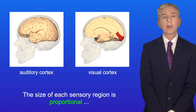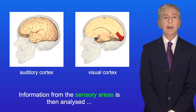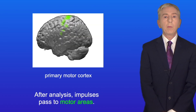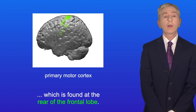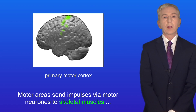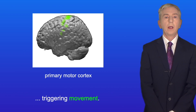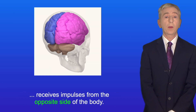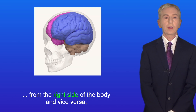The size of each sensory region is proportional to the number of receptor cells in that sense organ. Information from the sensory areas is then analyzed in nearby regions called association areas. After analysis, impulses pass to motor areas — a good example is the primary motor cortex, found at the rear of the frontal lobe. Motor areas send impulses via motor neurons to skeletal muscles, triggering movement. A key idea is that each hemisphere receives impulses from the opposite side of the body; for example, the left hemisphere receives impulses from the right side of the body, and vice versa.